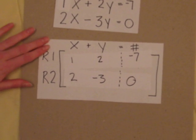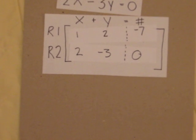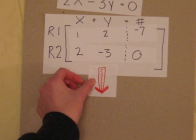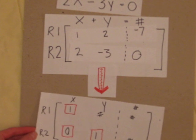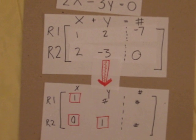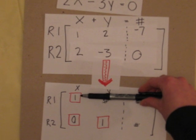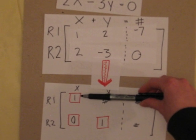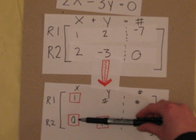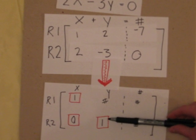Now, with Gaussian elimination, there's a general form that we want to get our problem to look like. We want to go from this to something that looks like this. Notice that there's a 1 in the x spot of R1, and a 0 in the x spot of R2, as well as a 1 in the y spot of R2.